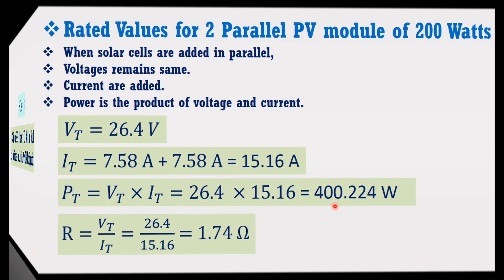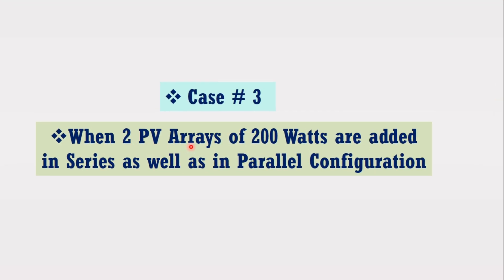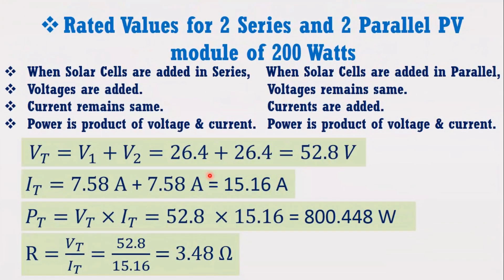Now let's consider a more complicated case in which two solar PV arrays are added in series and two solar PV arrays are added in parallel. Both series and parallel configurations are combined. Due to the series configuration, voltages are added, resulting in a total voltage of 52.8V. Due to the parallel configuration, currents are also added, resulting in a total current of 15.16A. Therefore, the total power, equal to the product of voltage and current, will become 800.448W.